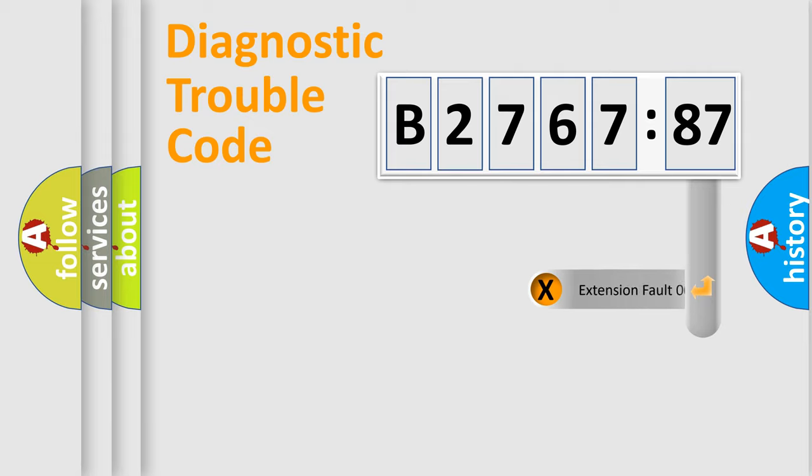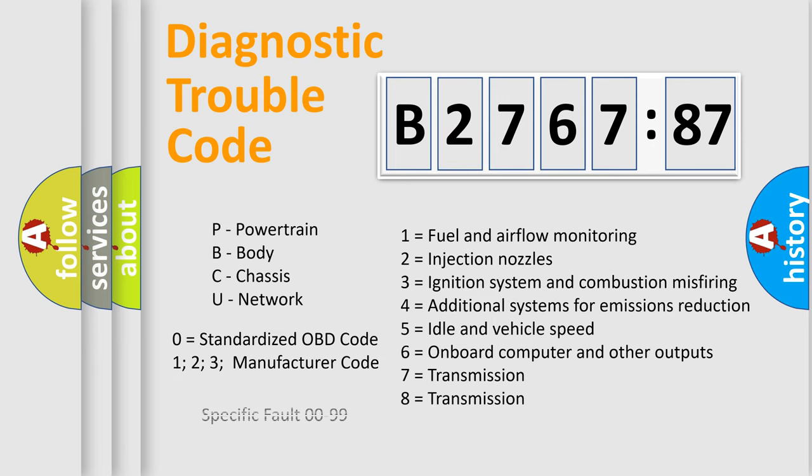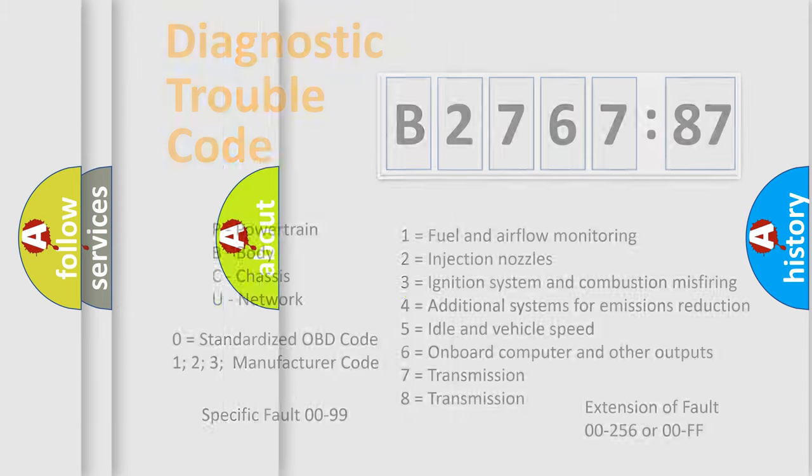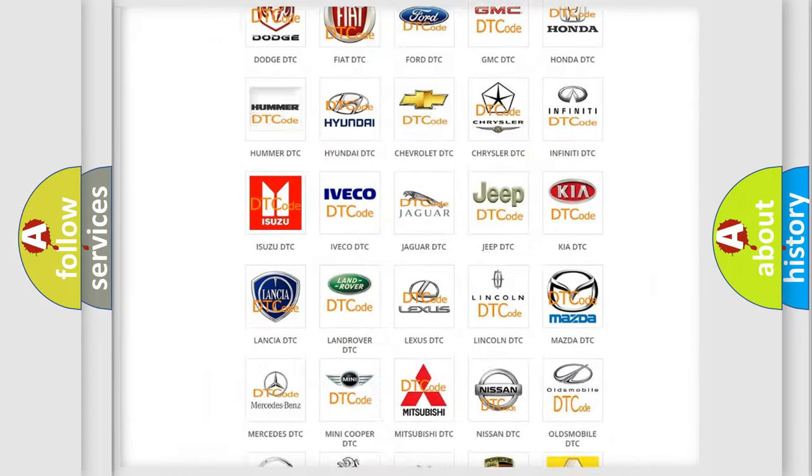Only the last two characters define the specific fault of the group. The add-on to the error code serves to specify the status in more detail. For example, a short to the ground. Let's not forget that such a division is valid only if the second character code is expressed by the number zero.